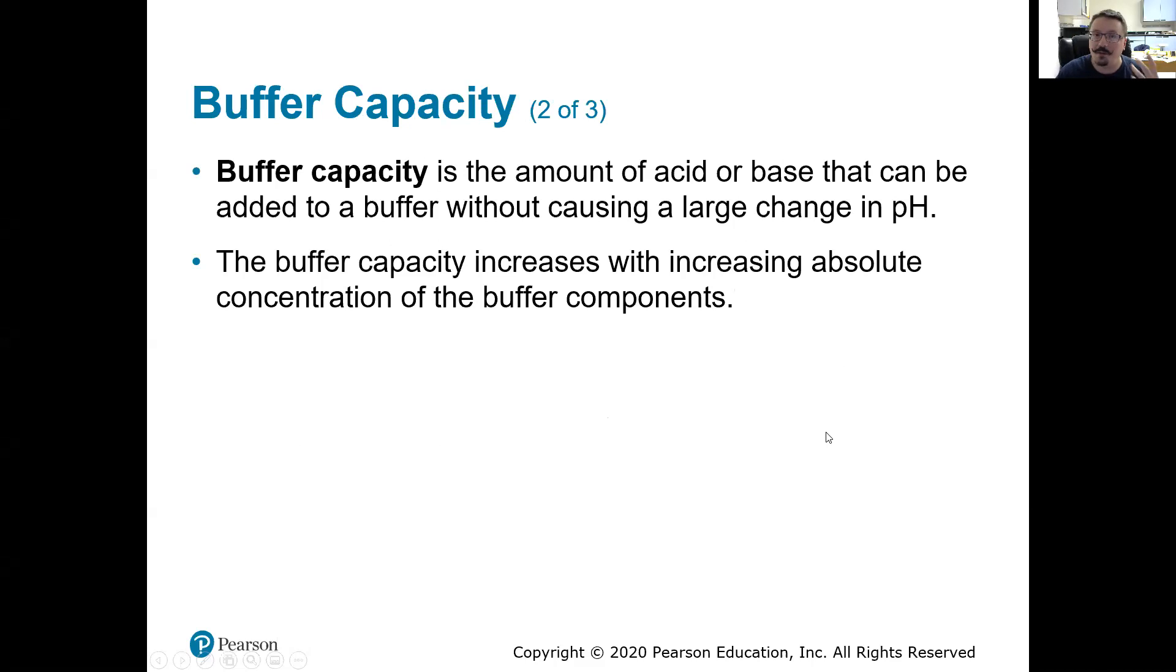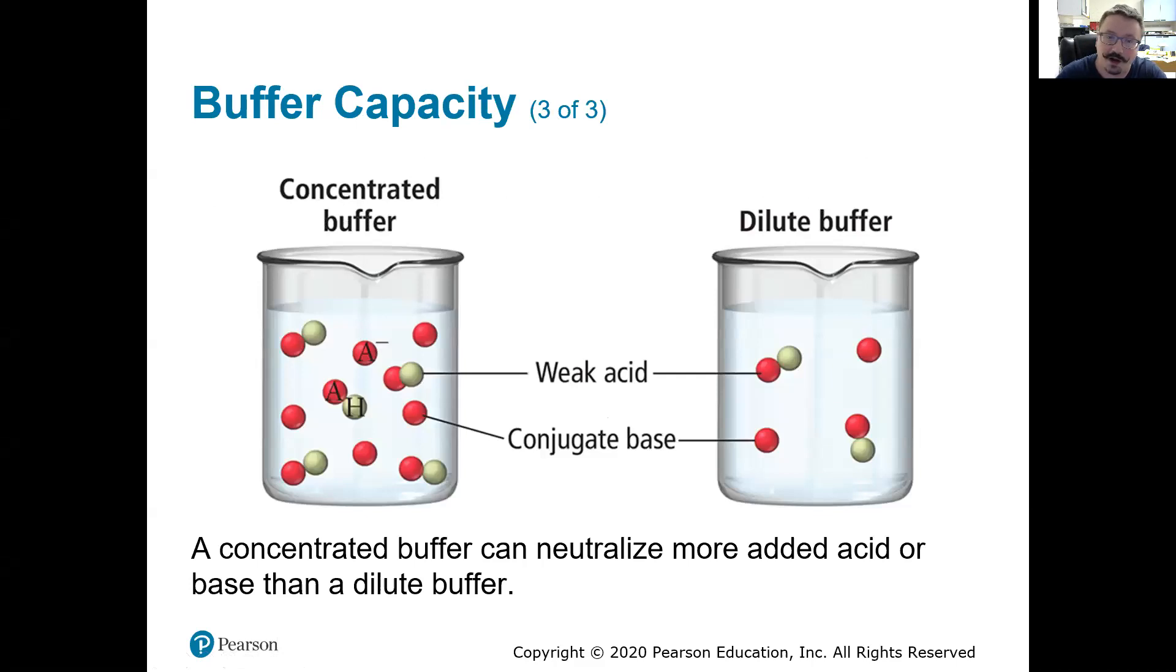And then if we go back, we have buffer capacity. This is how much acid or base can we add to this? And again, the higher the concentration, the better off we are here. Just from a logical perspective, if you think about this, if I'm adding acid to the solution, I need that conjugate base there to neutralize that acid. Well, if it's a concentrated solution, I'm going to have more molecules of that conjugate base. And therefore, I should be able to neutralize more molecules of any acid that we were to add. Or if I were going to start adding base, I need that weak acid to neutralize that base that I'm adding. Same way. The more concentrated it is, the more molecules of that weak acid, the more added base I can neutralize.